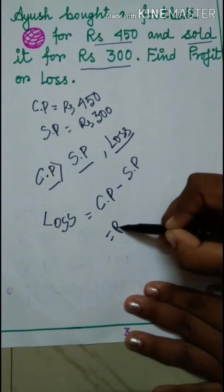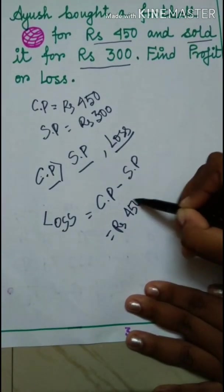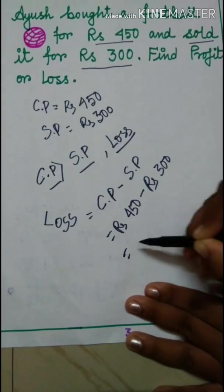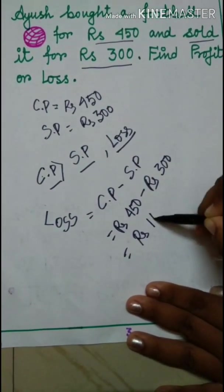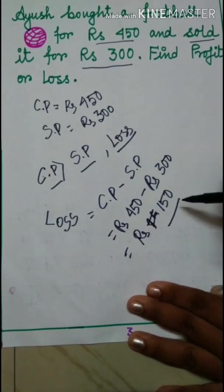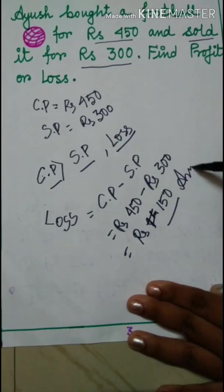And we have to find out the loss value. So loss equals to CP minus SP. That means Rs 450 minus Rs 300. So that means Rs 150 is the answer.